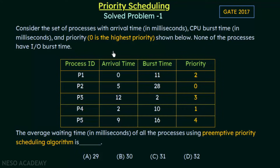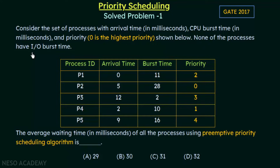We are given five processes with process IDs P1 to P5, their arrival times in milliseconds, their burst times in milliseconds, and the priority of each process. Zero is the highest priority, so the priority order from highest to lowest is 0, 1, 2, 3, 4. None of the processes have IO burst time, so we only need to consider the CPU burst times given here.